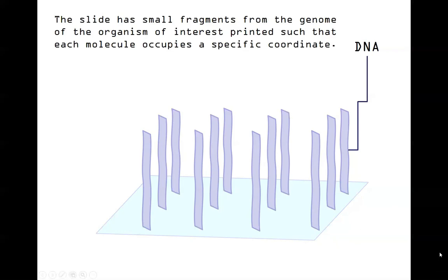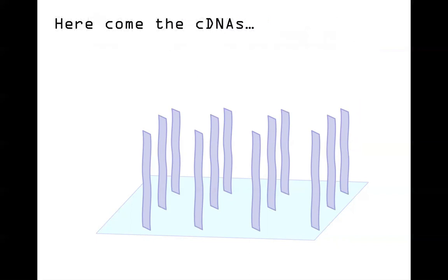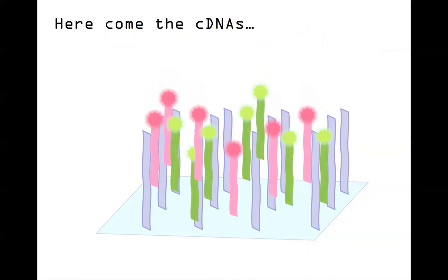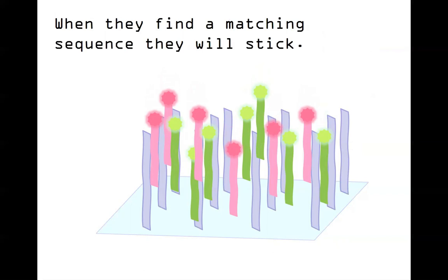That orientation doesn't change — the computer always knows where all these sequences are. Now that we have all the DNA printed on it at a microscopic scale — all these open reading frames — this is called an array. That's why the experiment is called a microarray: a very small array where we're looking at DNA molecules. The open reading frames hopefully capture all potential genes that could be expressed. We can now drop our cDNAs down onto this.